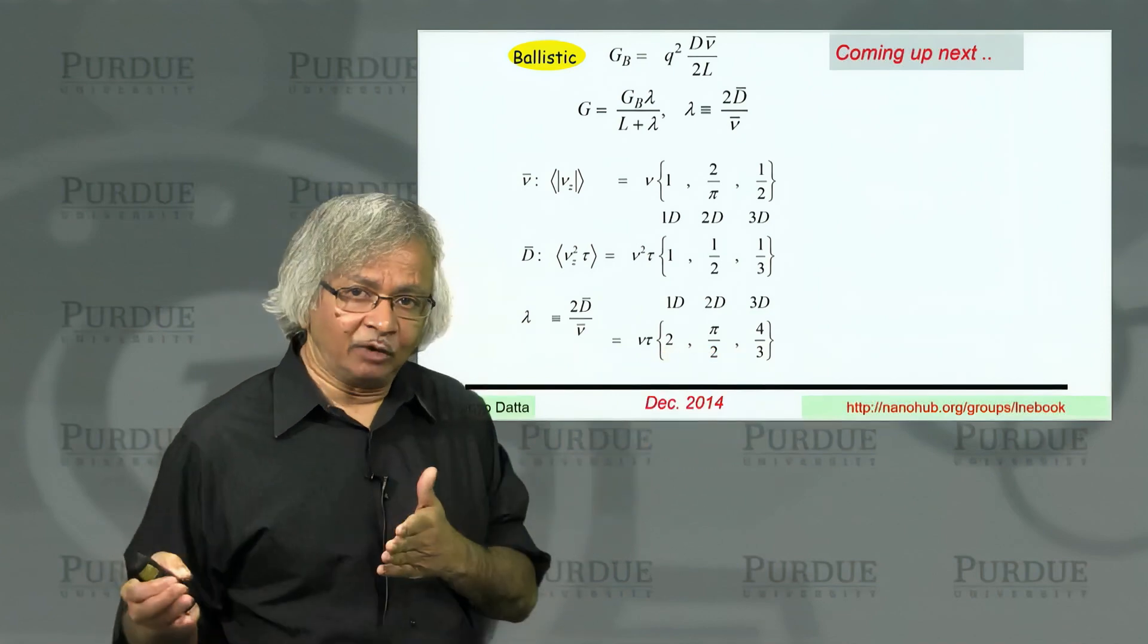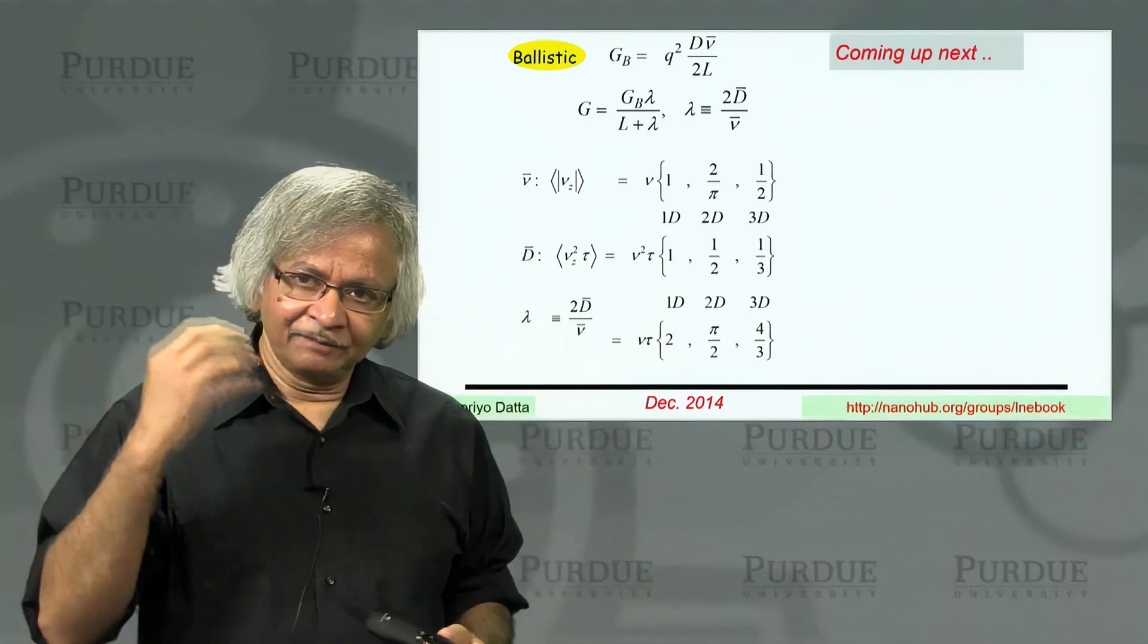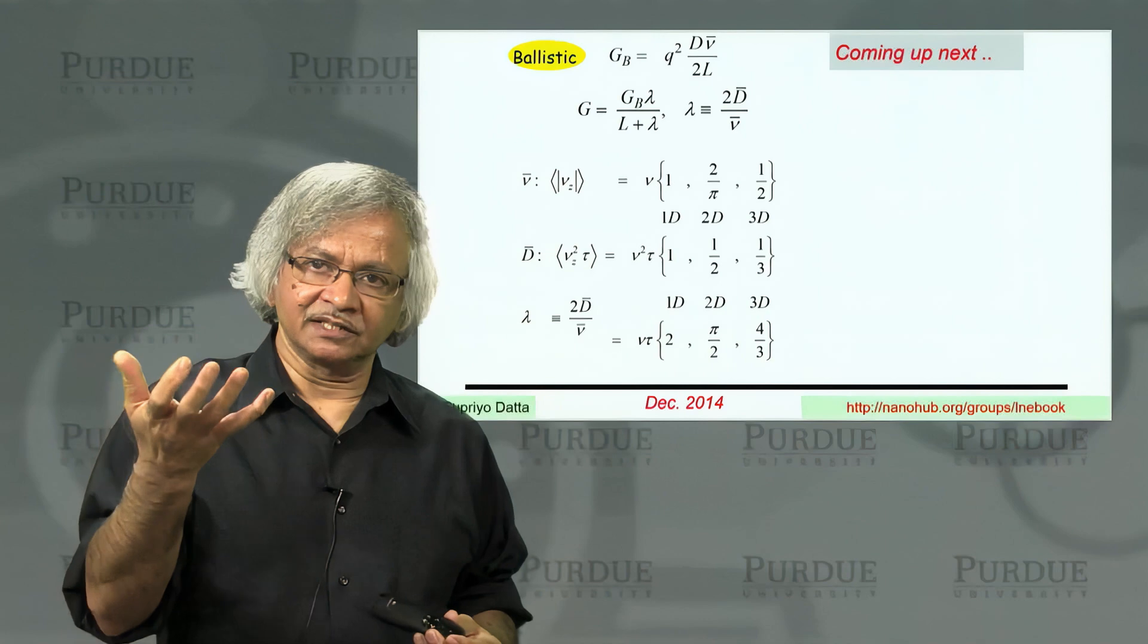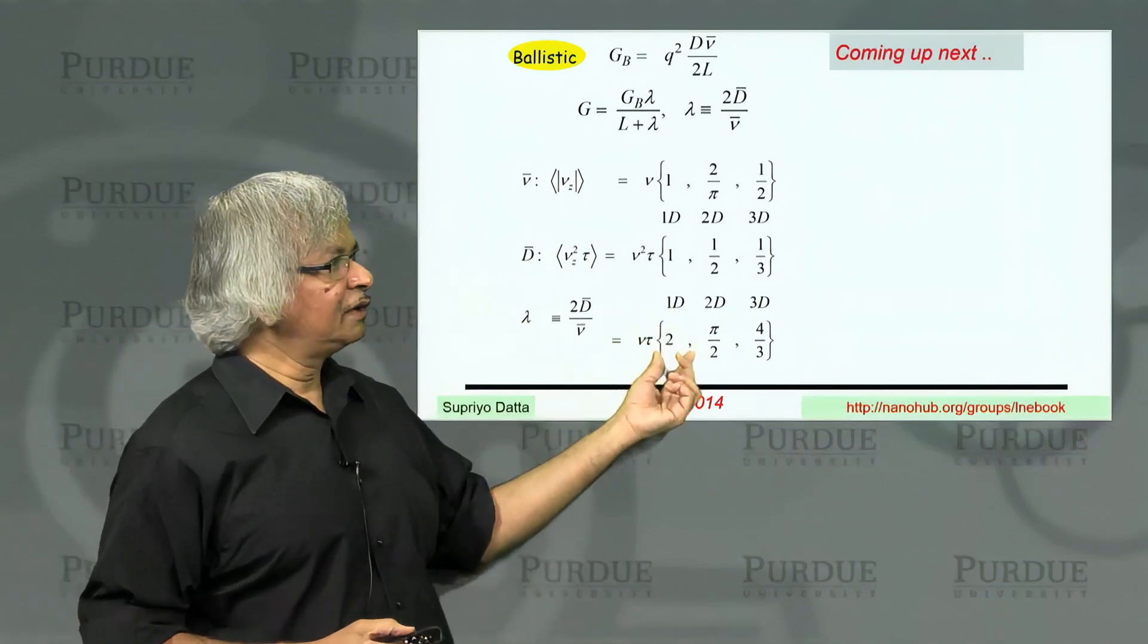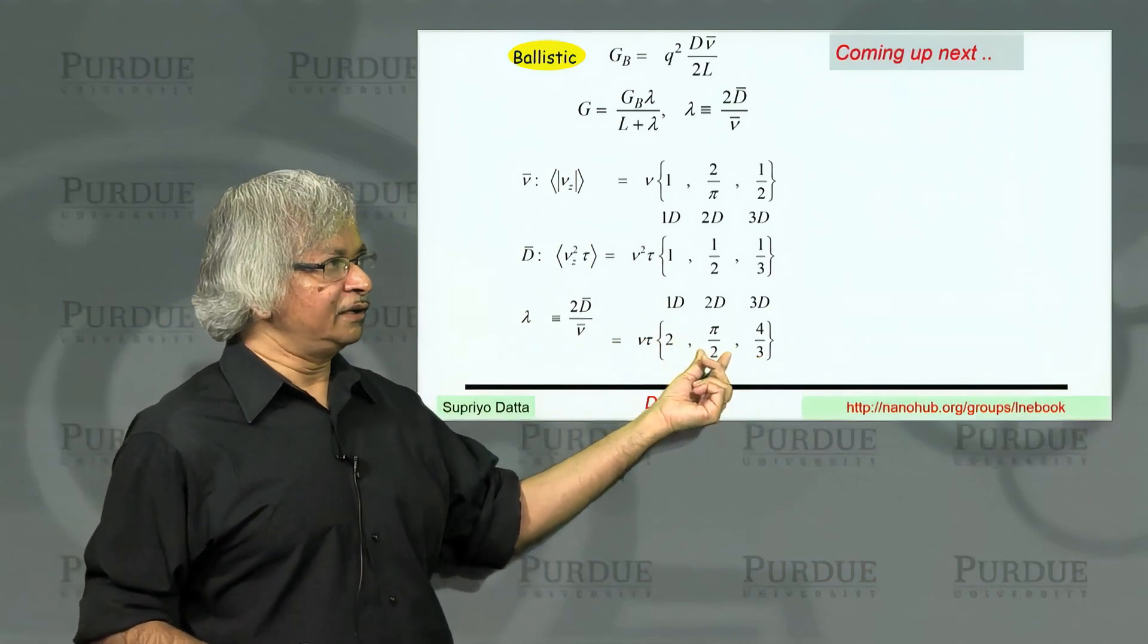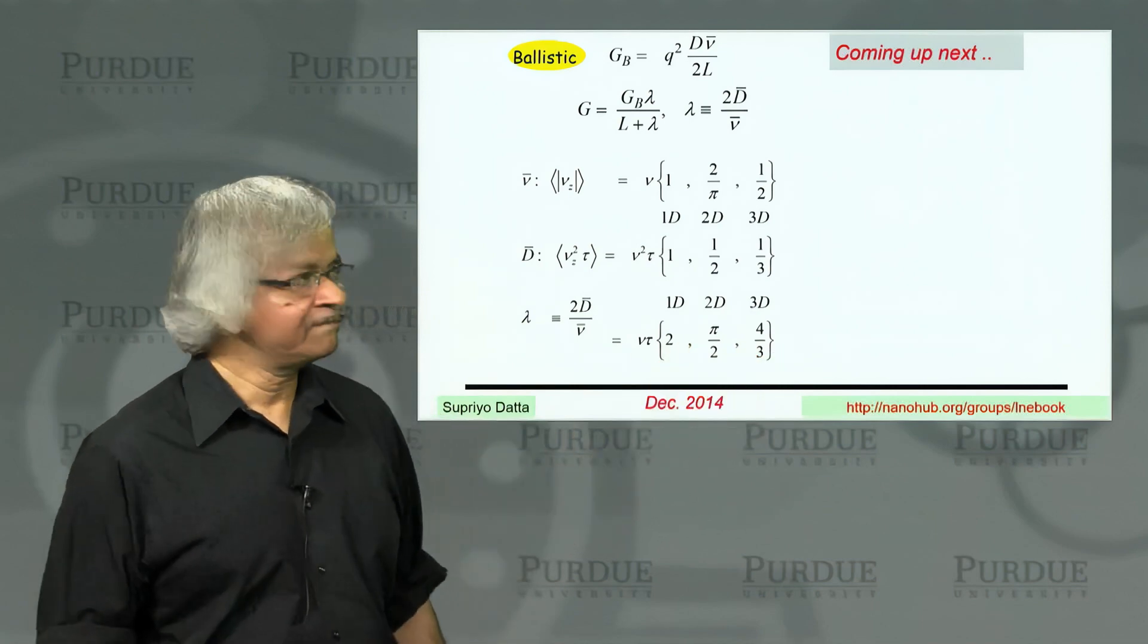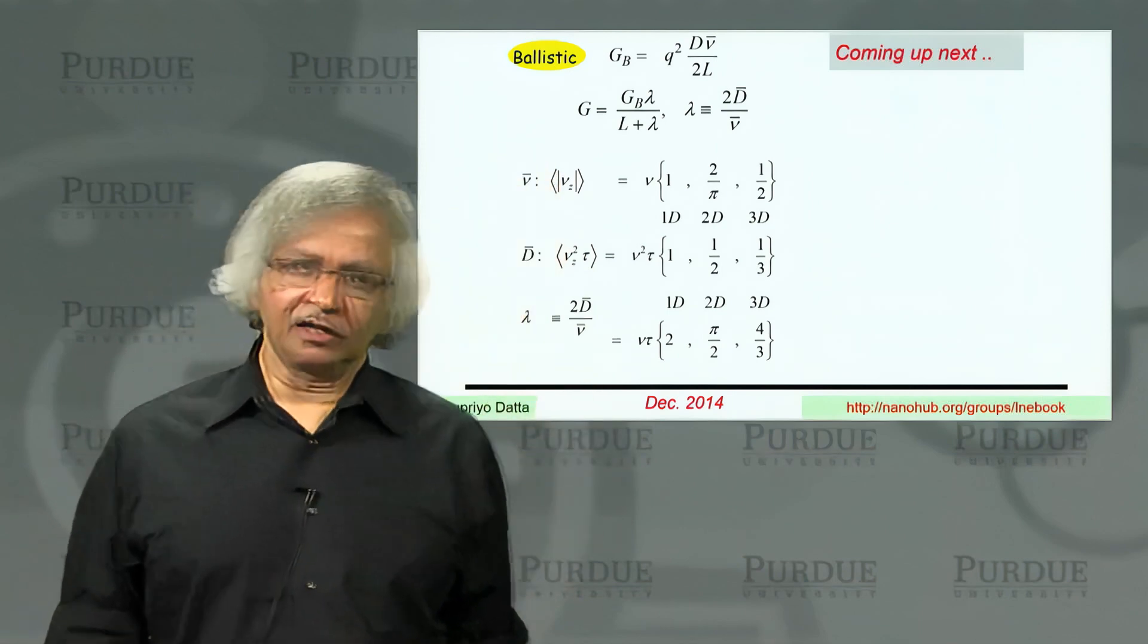So the mean free path the way we have defined it, the one that leads to this simple expression as L plus lambda, that mean free path then is v times tau, which is what you normally might think as mean free path, but times a certain factor that depends on what the dimensionality of your conductor. It's always bigger than 1. That's because what we're really talking about is this mean free path for backscattering and so tau is the mean free time for scattering but then only a fraction of all the scattering processes involves backscattering where you actually turn around. And so the factor here is always bigger than 1. In 1D it's 2. In 2D it's half pi, which is like 1.6 or so. And here in 3D it's 4 thirds, which is like 1.3.